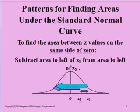To find the area between z values on the same side of zero, subtract the area to the left of z1 from the area to the left of z2.